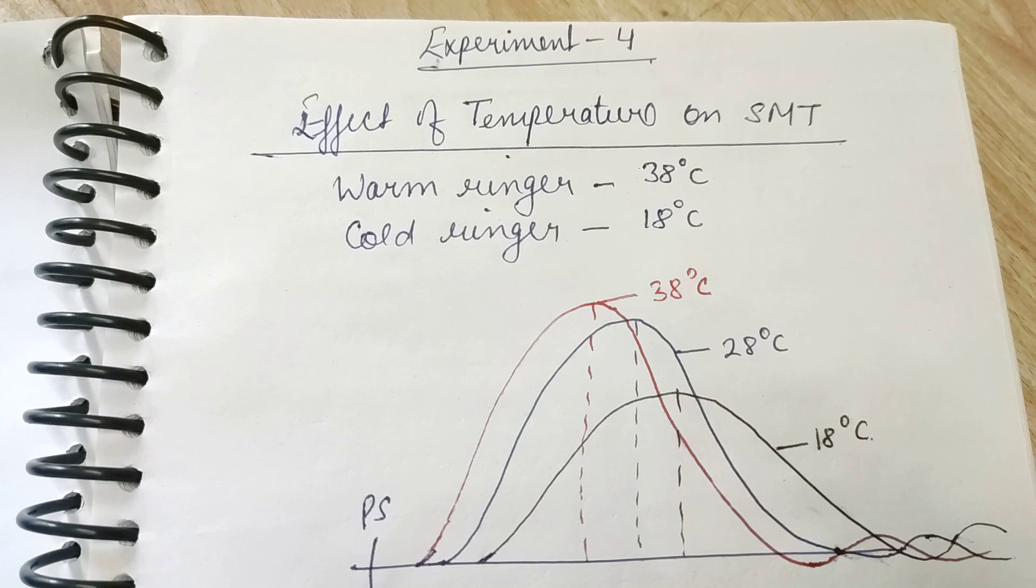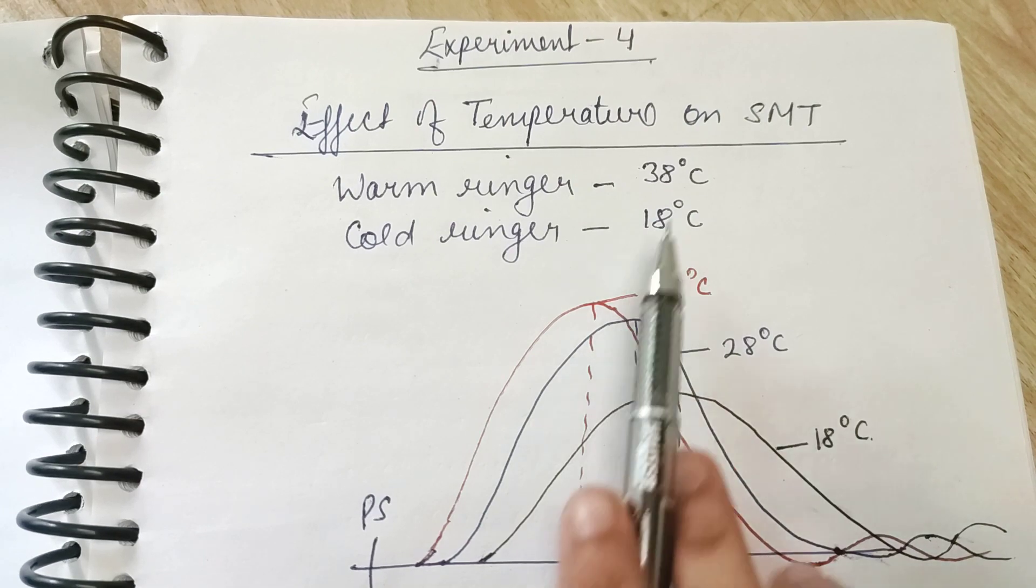What is being done is basically the muscle preparation which we are using—the sciatic nerve and gastrocnemius preparation. That preparation we have to put in a chamber called the Lucas chamber where we have to put warm ringer and cold ringer solution.